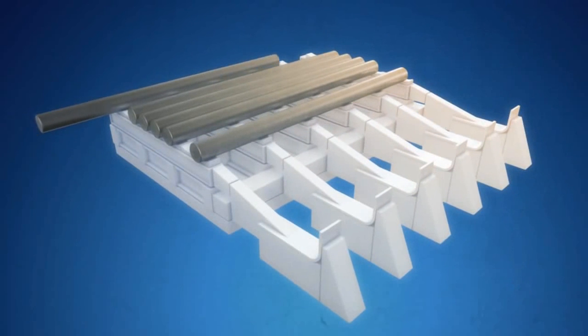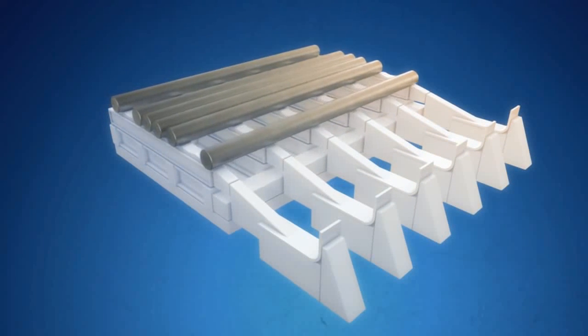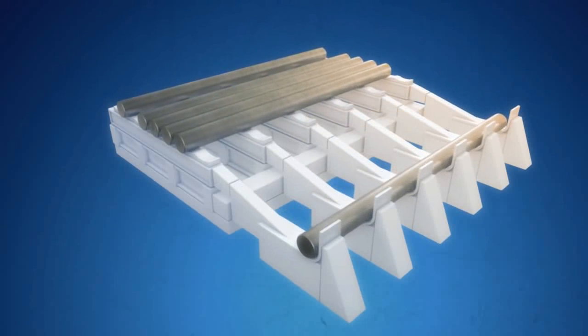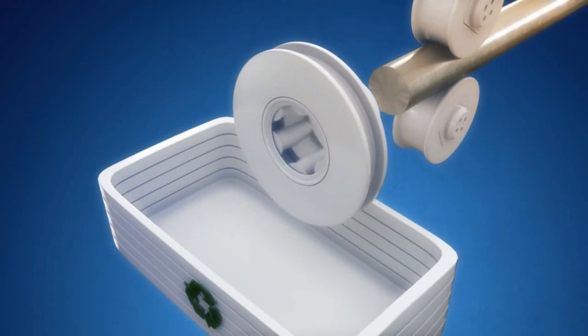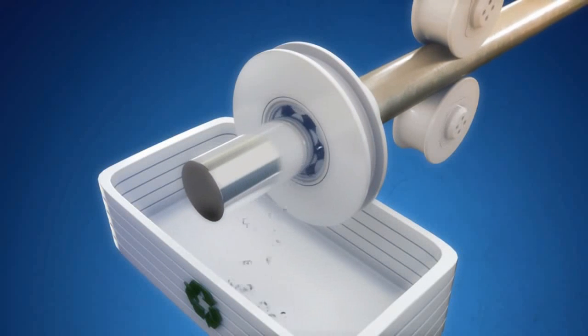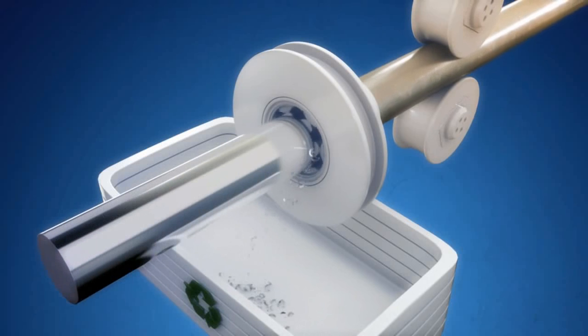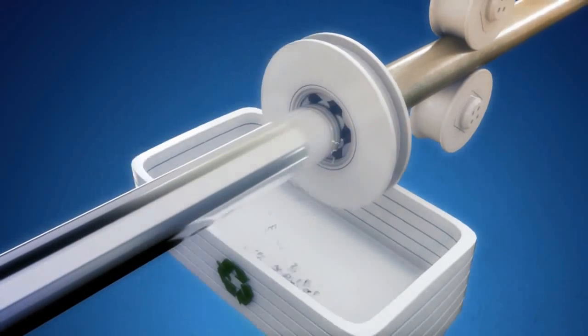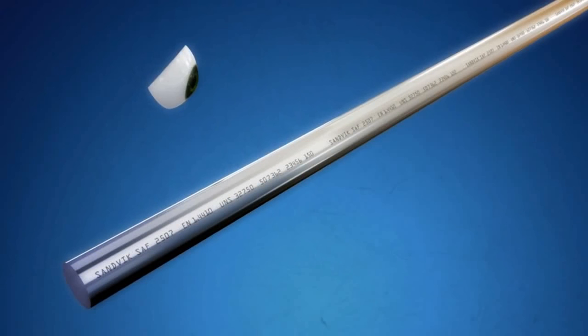The bars are transported to the cooling bed before being peel turned and polished to mirror finish. The finished bar is ink marked and visually inspected.